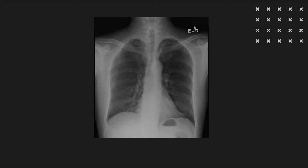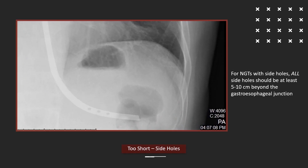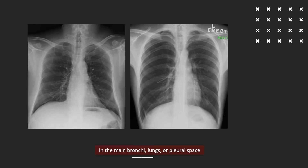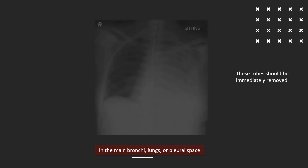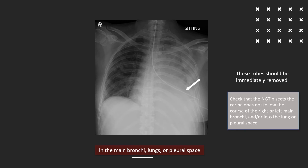Note that if the tube contains side holes, all of the side holes — and not just the tip — must be distal to the gastroesophageal junction to decrease aspiration risk. The tube should not enter the main bronchi or the lungs, to avoid airway or pulmonary injury. Inadvertent placement and advancement of the tube even more distally can extend the tube into the pleural space.